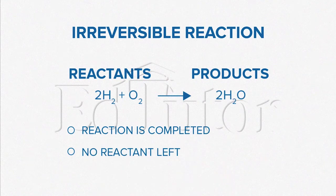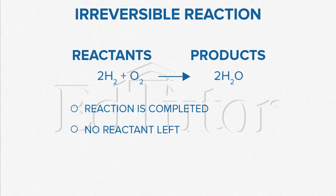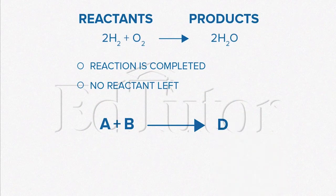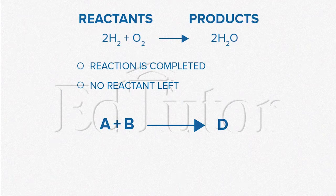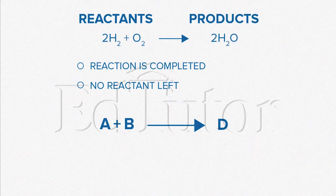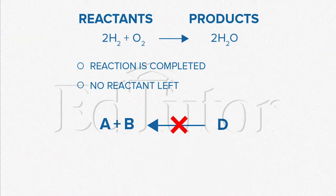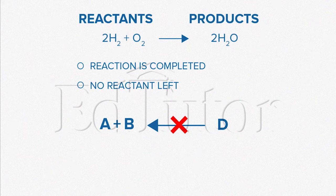An irreversible reaction is usually represented like this figure shown on your screen. In this representation, the single arrow signifies the reaction is irreversible. This indicates that a reactant may change into the product, but a product cannot change back into the reactant.